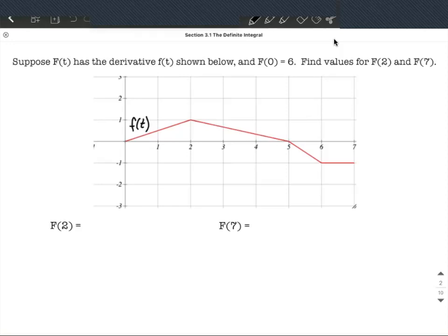We're told the y-intercept for big F is going to be at 6. So that's kind of like a starting position or initial value. And then we want to figure out what is going to be F of 2, big F of 2 and big F of 7.